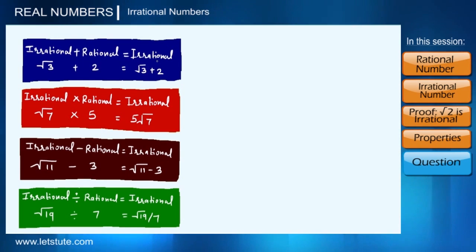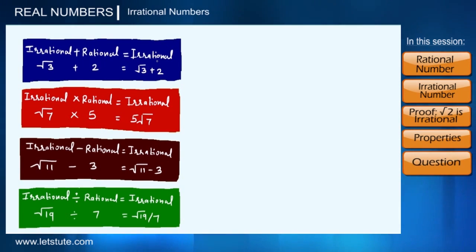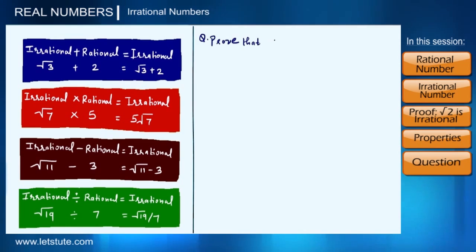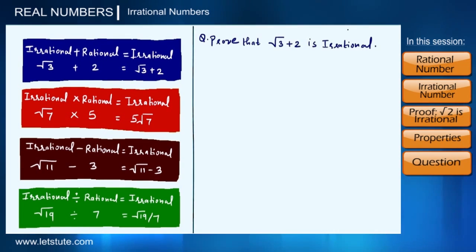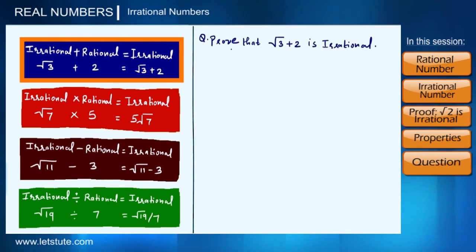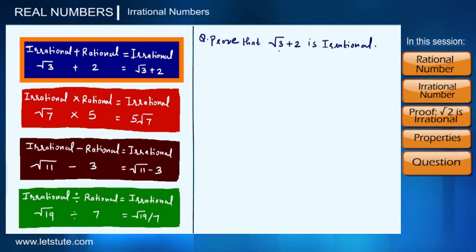There may be various types of questions based on these relations. For example, let's prove that root 3 + 2 is an irrational number — that is, we have to prove that the addition of a rational and an irrational number is always irrational.